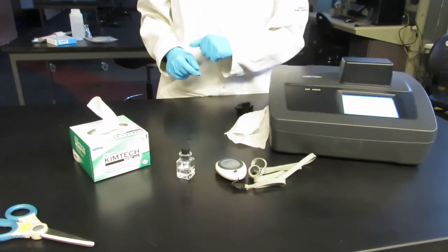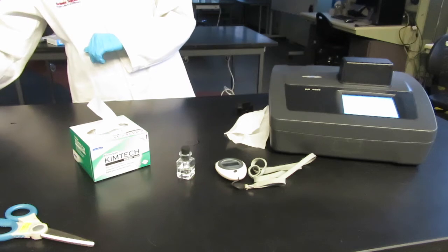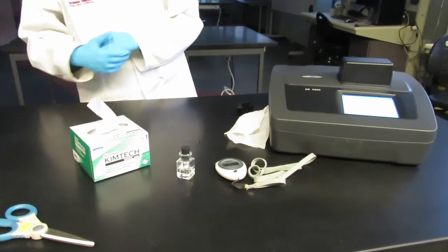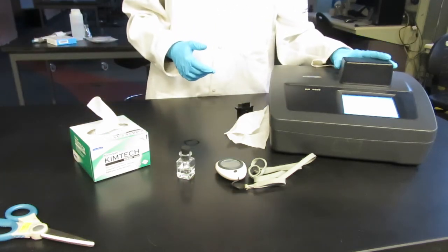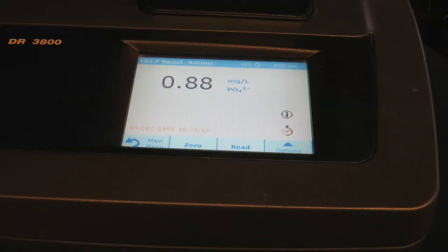Insert the sample cuvette into the cell holder, cover with a light shield and press read. The value displayed will be milligrams per liter of reactive phosphate.